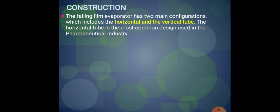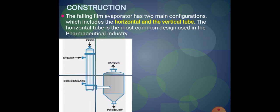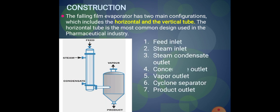The most common design used in pharmaceutical industries is the horizontal tube evaporator. The evaporator consists of two main components: one is the heat exchanger and the second one is the cyclone separator.